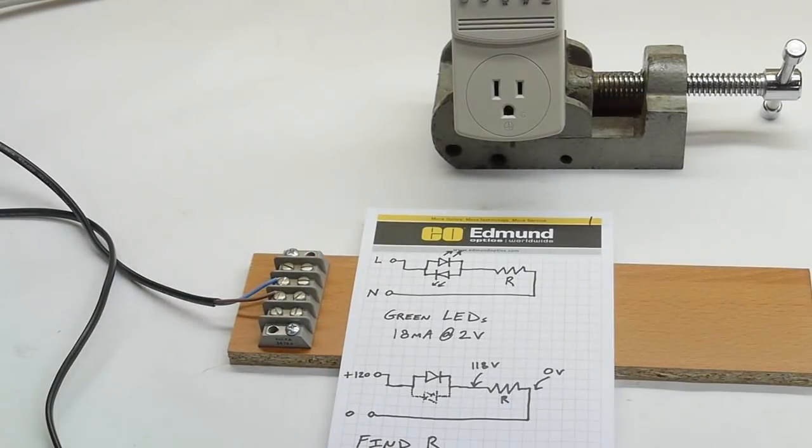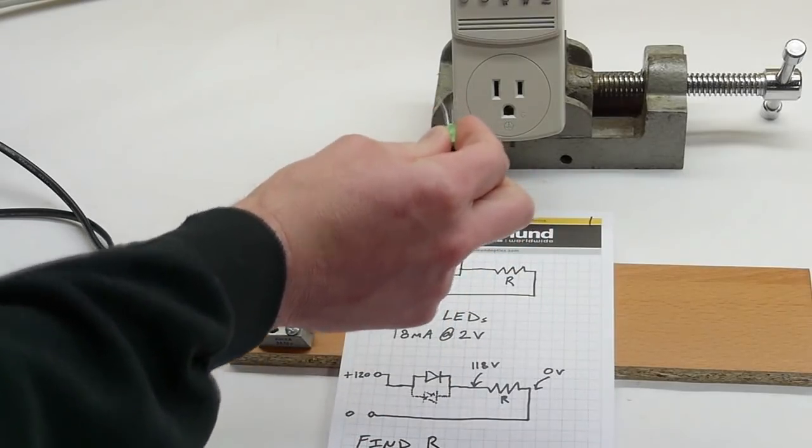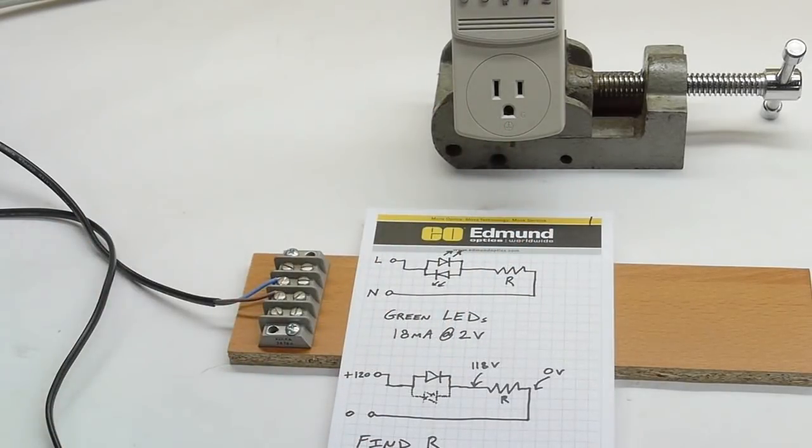So one will be on for both halves of the cycle. But obviously we can't connect the LED right up to house current because the voltage is so high that there would be way too much current flowing. So if you just took an LED, don't do this by the way, and just put it right into the outlet, it would probably explode in a violent pop because the amount of current would be measured in hundreds or thousands of amps or something.